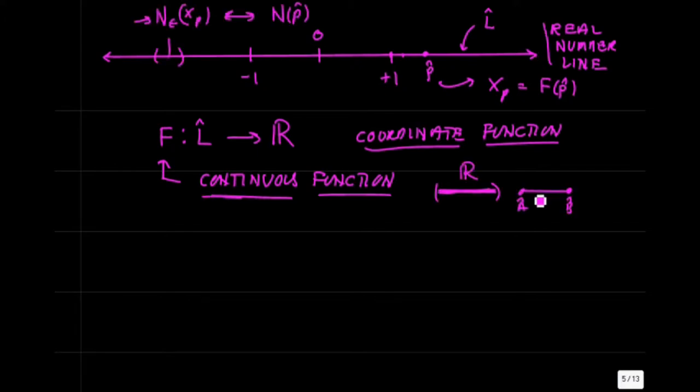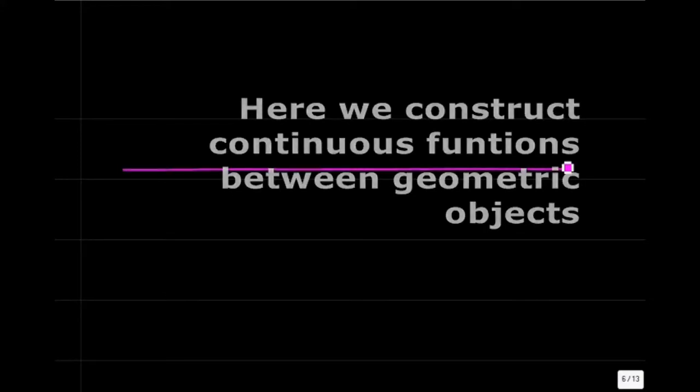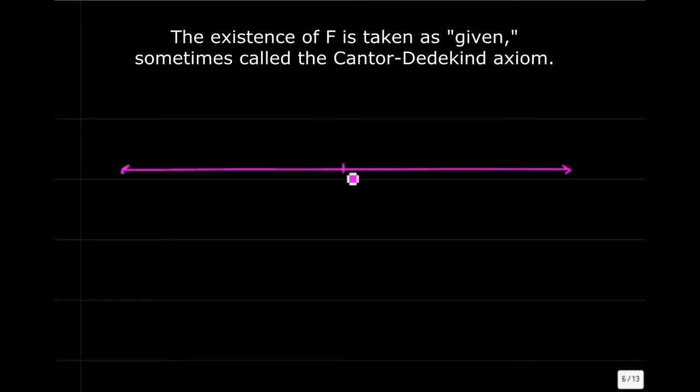We're going to move along with some construction work here and come back to the problem of constructing continuous functions between geometric objects. We have one continuous function already: the real number line, and that is continuous by acclamation — we take that as a given.